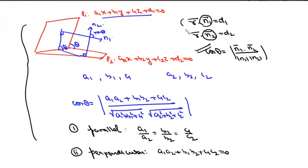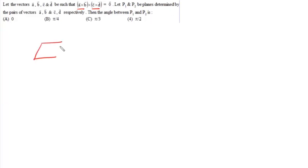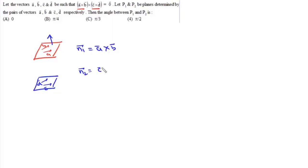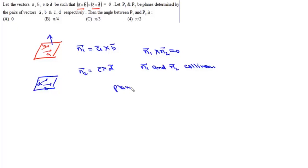In this question, vectors a, b, c, d are such that (a cross b) cross (c cross d) = 0. Planes p1 and p2 are determined by pairs of vectors a,b and c,d respectively. The normal n1 is parallel to a cross b, and n2 is parallel to c cross d. Since n1 cross n2 = 0, vectors n1 and n2 are collinear, meaning the two planes p1 and p2 are parallel, so the angle between them is 0 — option a.